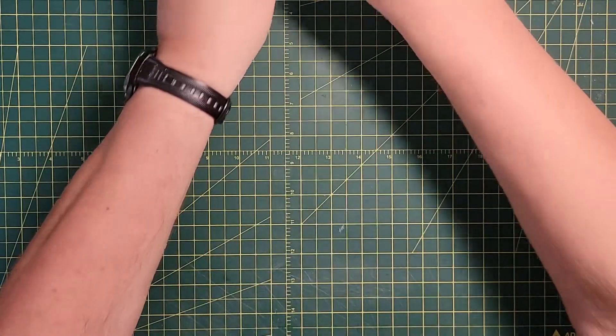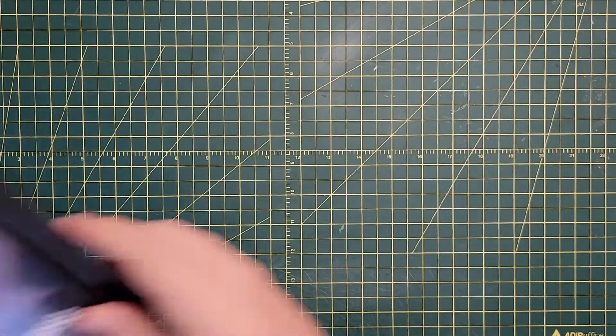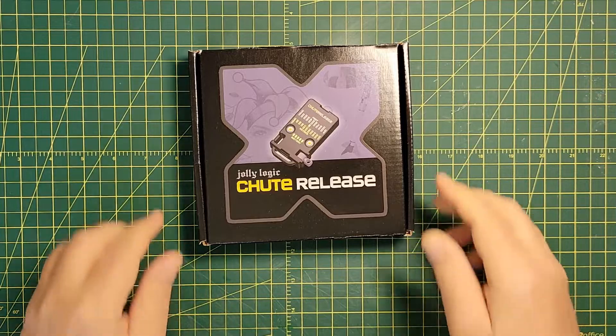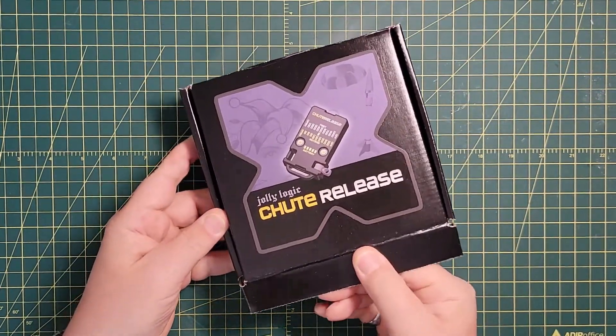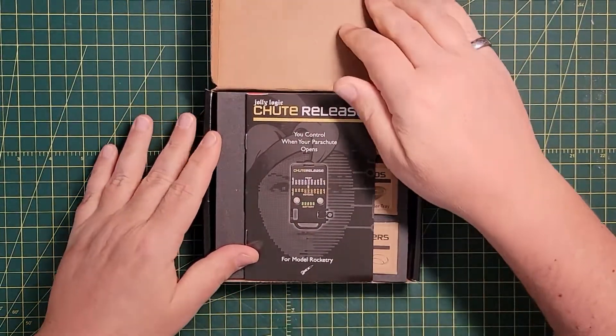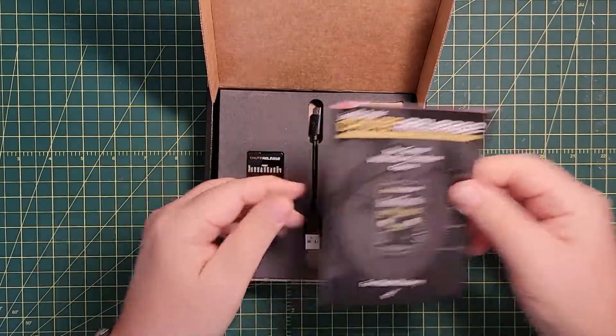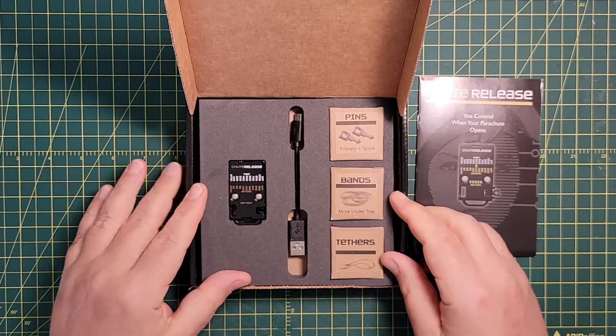And the next piece of equipment I got was also from Jolly Logic. So this is a Jolly Logic shoot release. I guess technically this is an unboxing. So it comes with a manual. It's actually quite small.